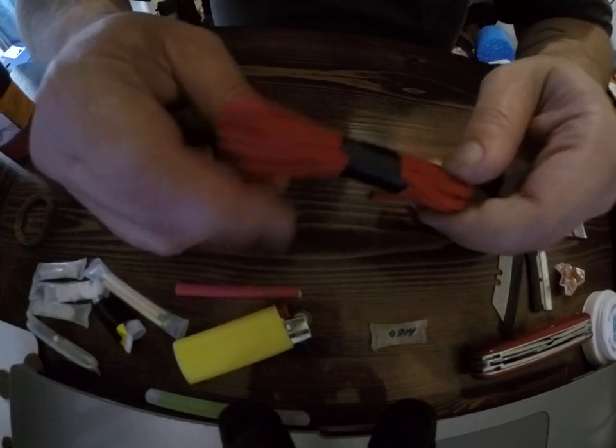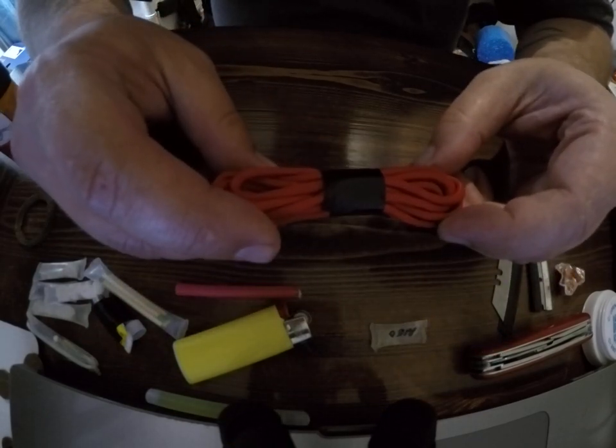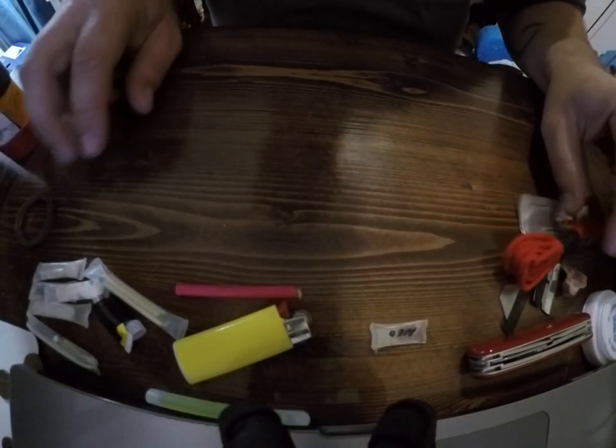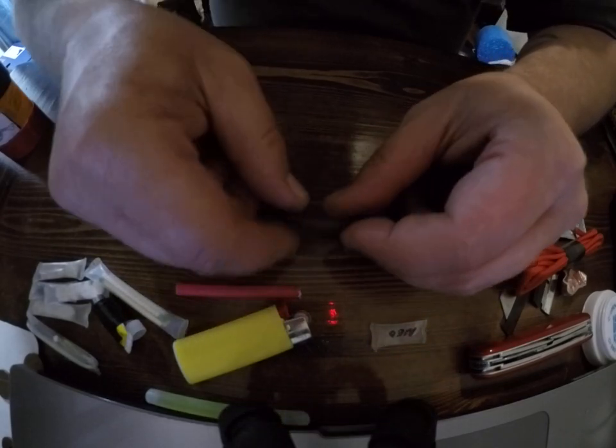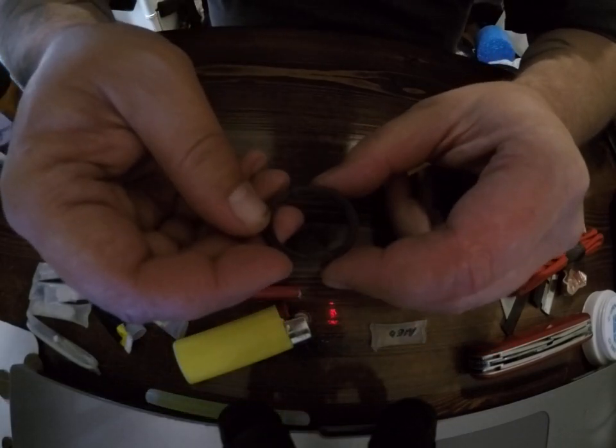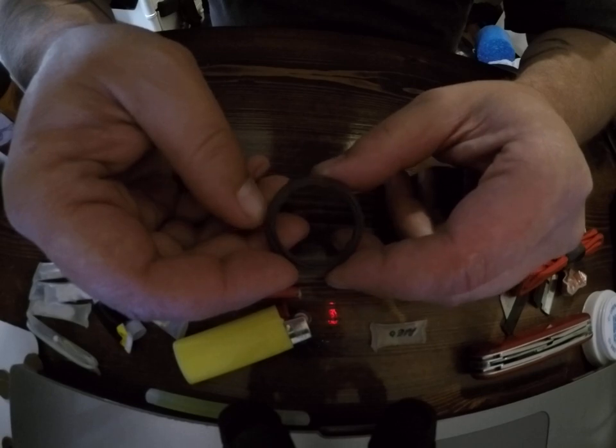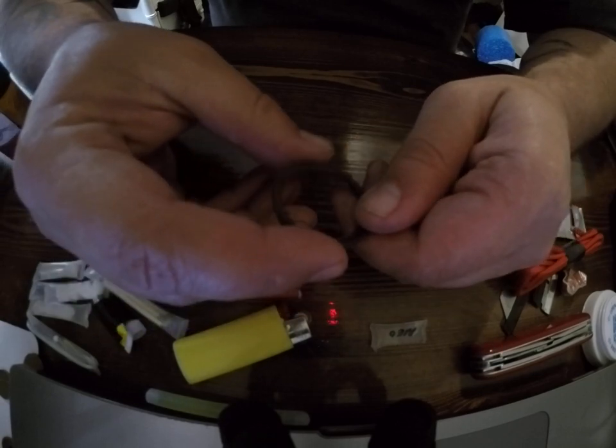550 cord, because you can't have too much cordage. I believe it's approximately 12 foot if I remember right. Snare wire, because I do snare creatures. Using 550 cord or fishing line for a snare is disastrous. They will chew right through it. Snare wire is the best way to go.